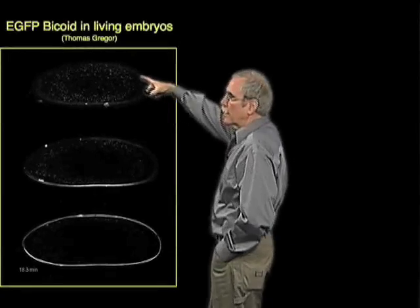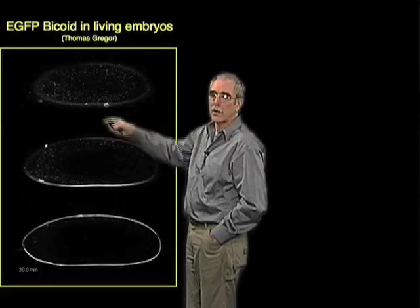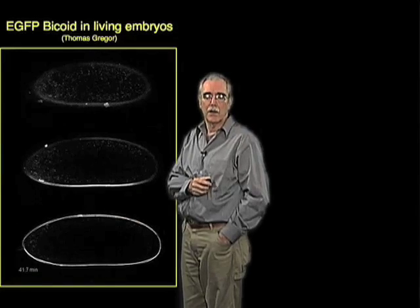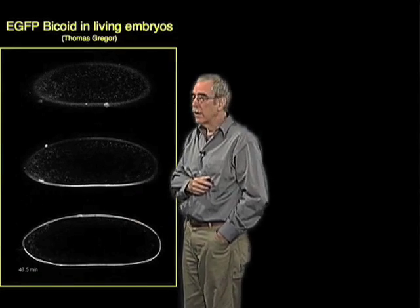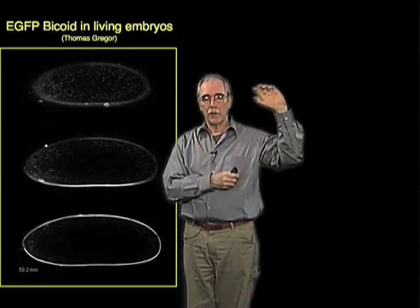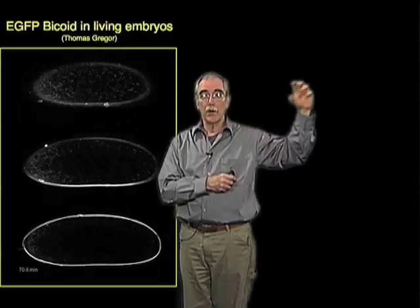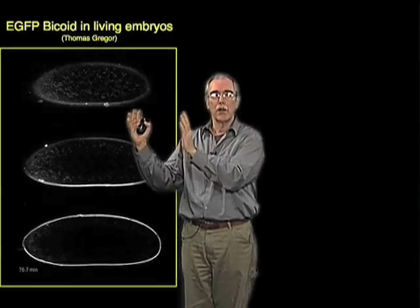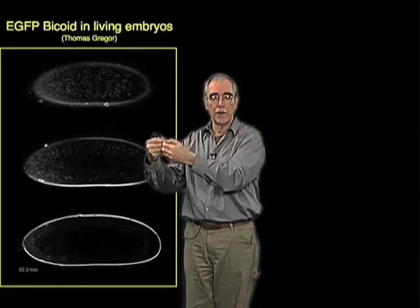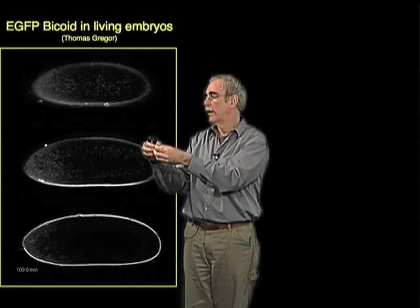These are living photographs at different levels of a single Drosophila embryo that expresses this EGFP-bicoid transgene that Thomas Quaker made. The transgene is under control of the normal bicoid transcription controls during oogenesis. It also has the normal 3' UTR of the bicoid RNA, which is the part of the RNA involved in localizing that RNA to the anterior end of the egg.